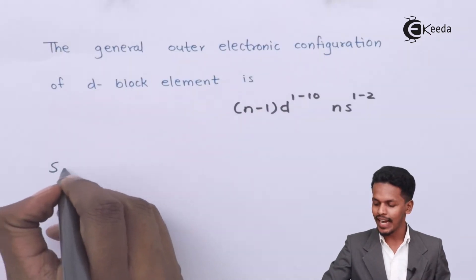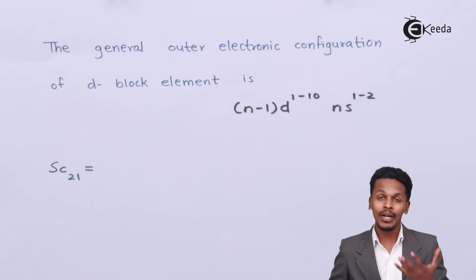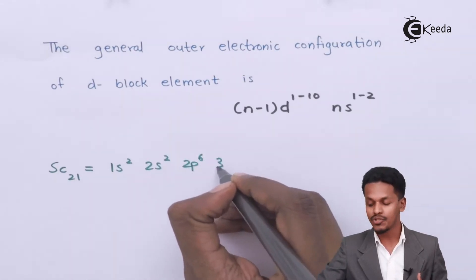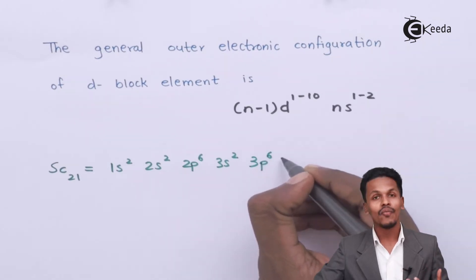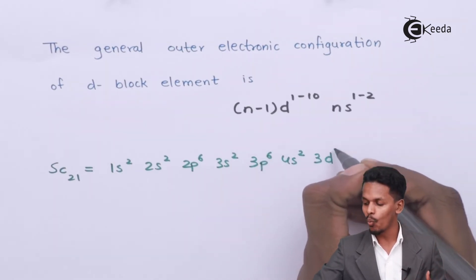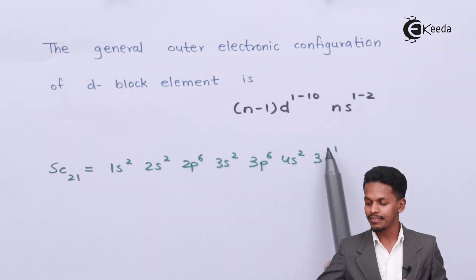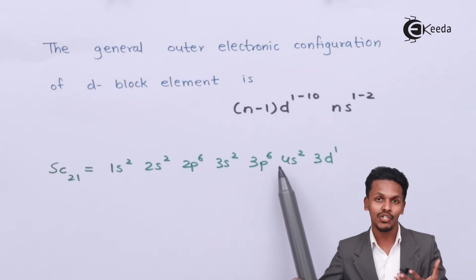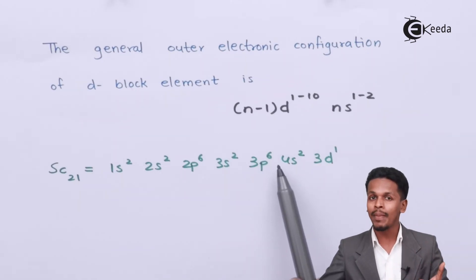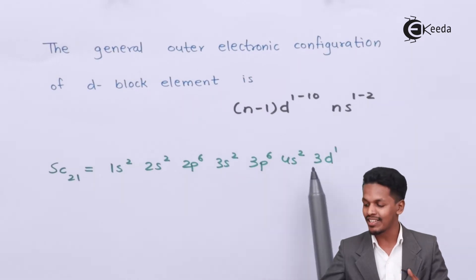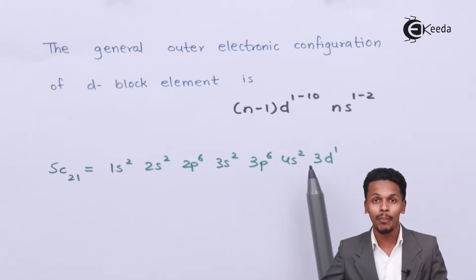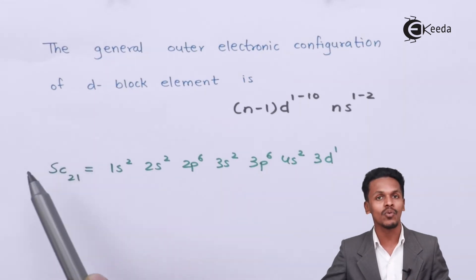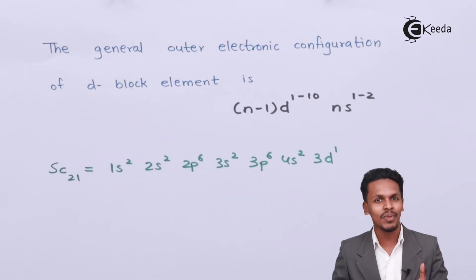Scandium has an atomic number of 21. Its electronic configuration is 1s² 2s² 2p⁶ 3s² 3p⁶ 4s² 3d¹. The last electron enters in the 3d orbital, where 4 is the fourth shell — the principal shell — and n-1 equals 4-1, which is 3. So the last electron enters in the penultimate d orbital, and that is why scandium is known as a D block element.